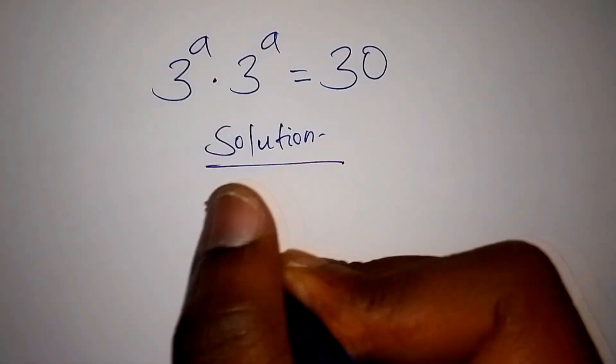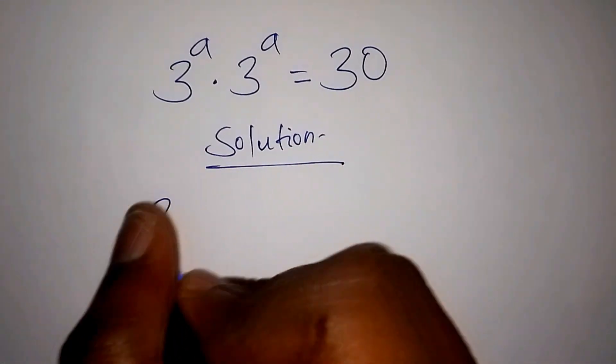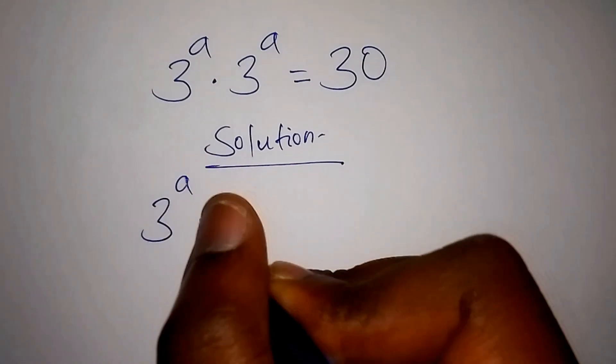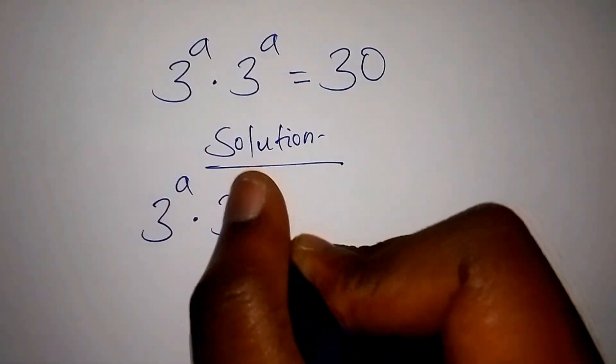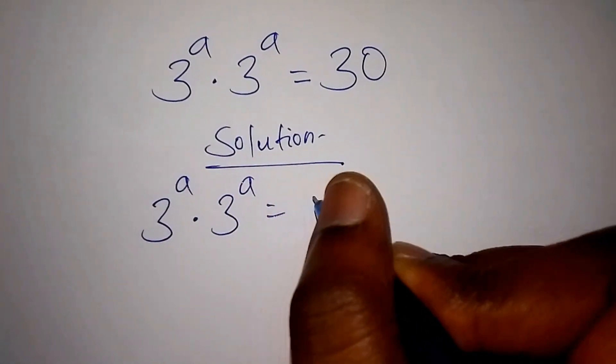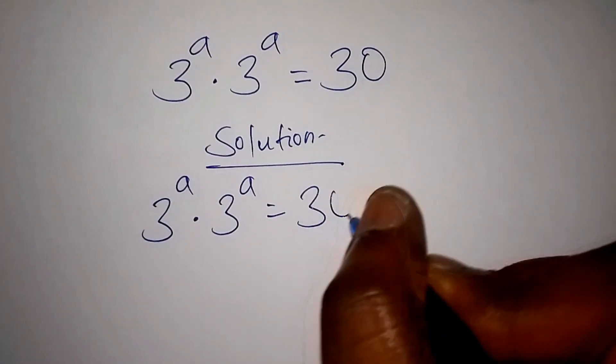We have 3 to the power of A, multiplied by 3 to the power of A, equals 30.